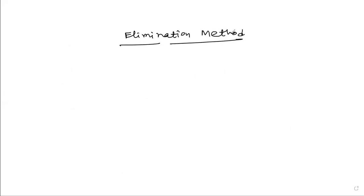The elimination method is a bit different from the substitution approach. Let's take a pair: 2x − 3y = 7 and 5x + y = 9. The technique here is to make the coefficients of any one variable the same in both equations.